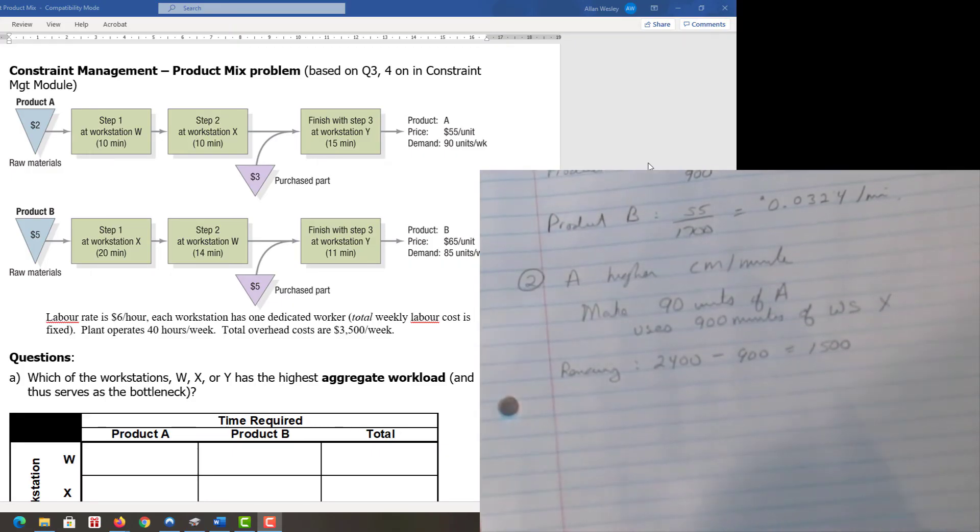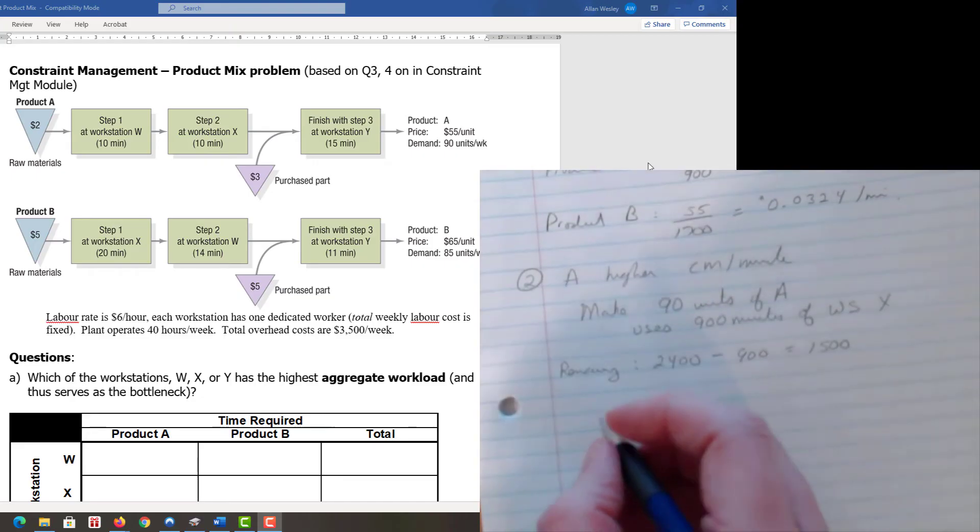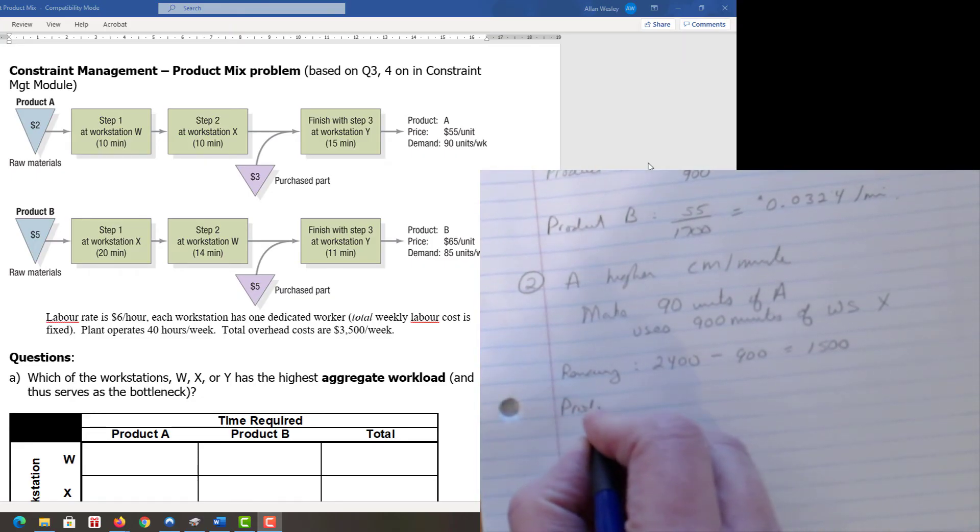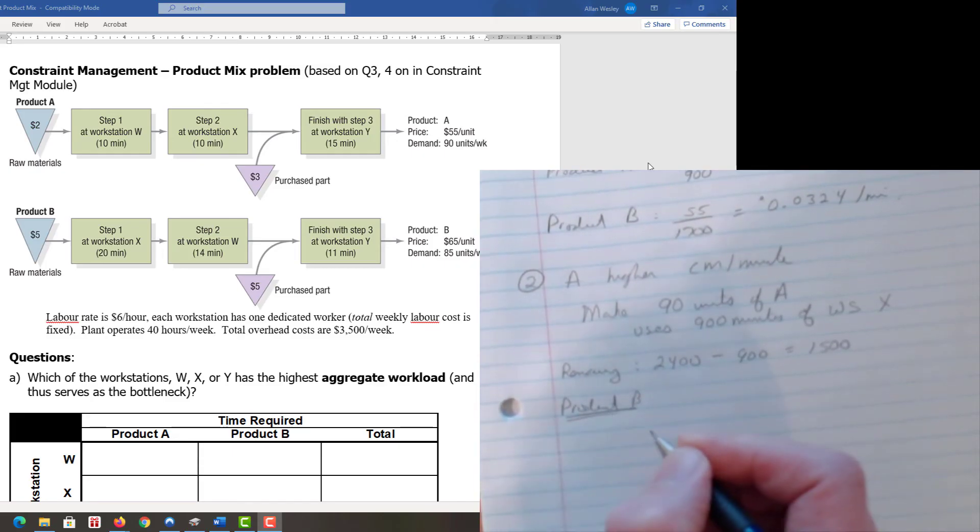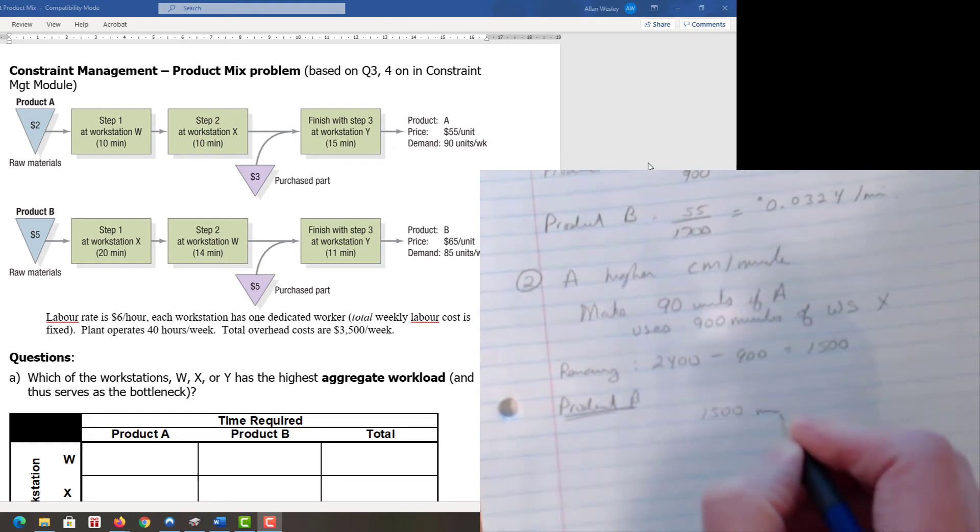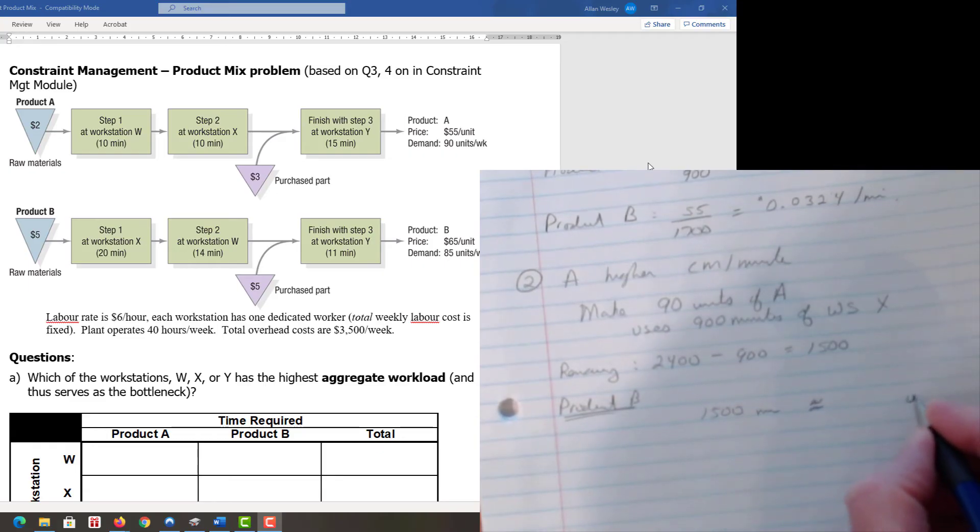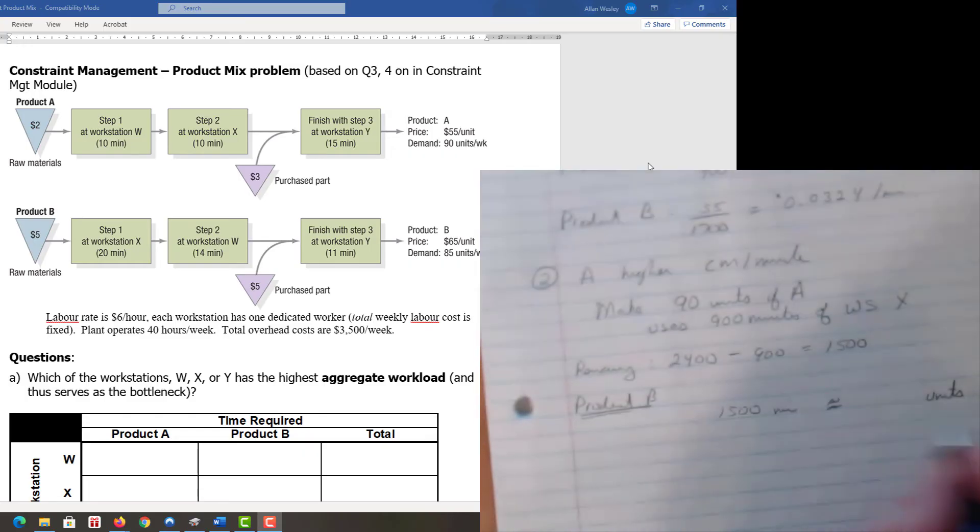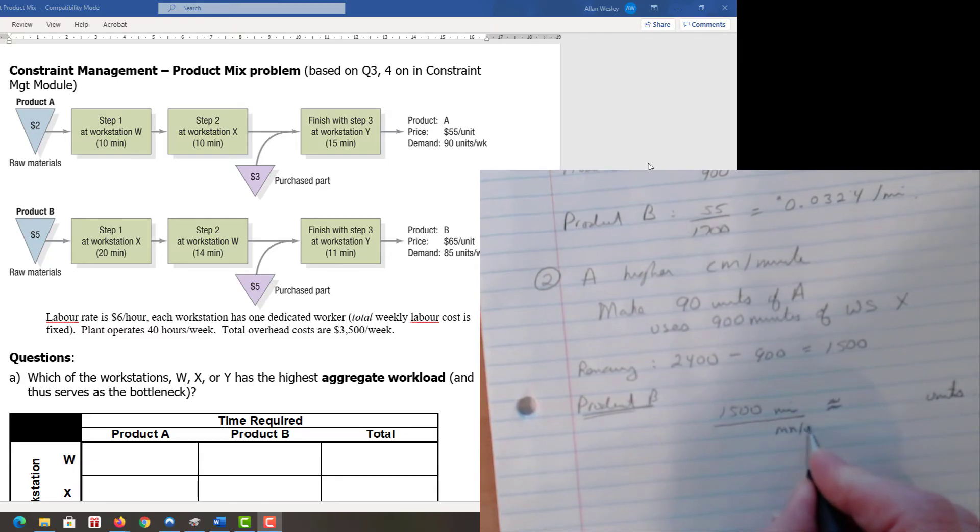For product B, we have 1,500 minutes available and we want to know how many units that ends up being. I have minutes and want units, so I must be dividing these minutes by something that is minutes per unit. What comes in minutes per unit?